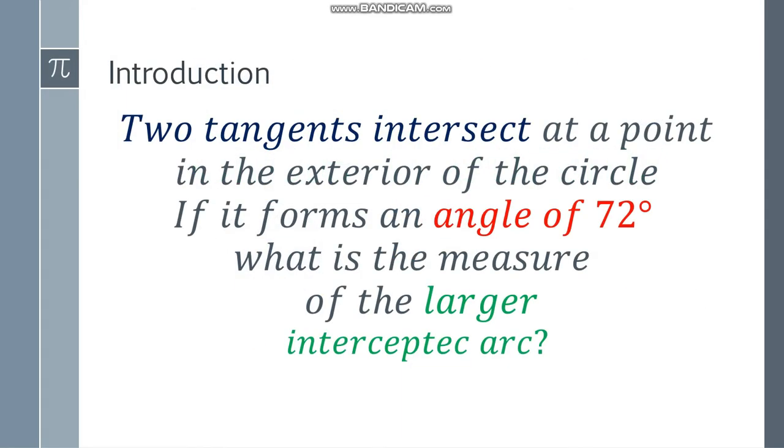The question says two tangents intersect at a point in the exterior of the circle. It forms an angle of 72 degrees and we need to find the larger intercepted arc.